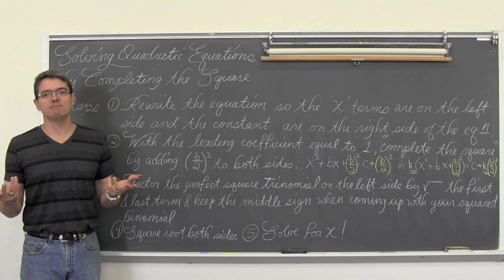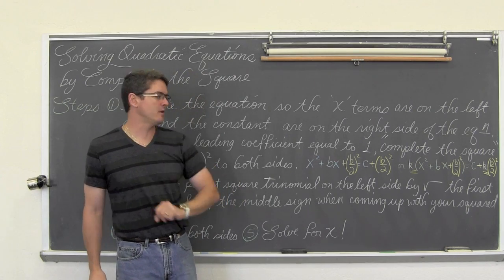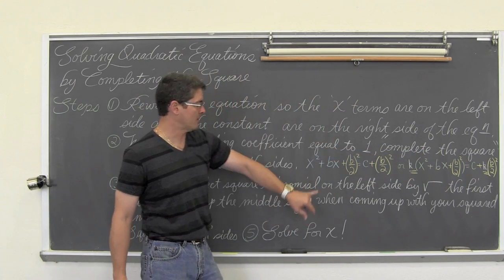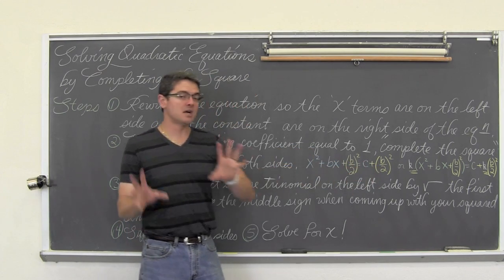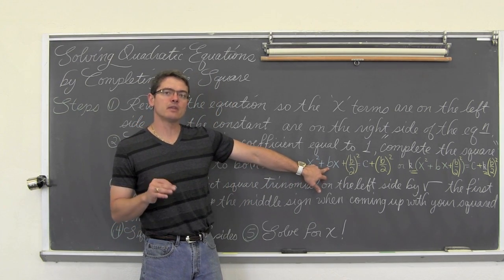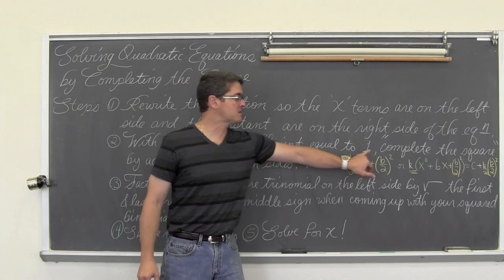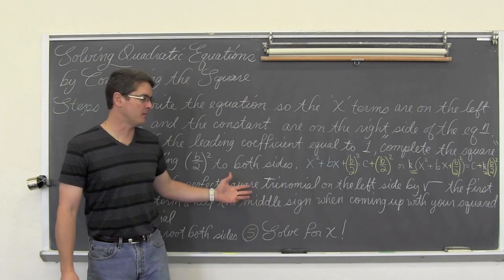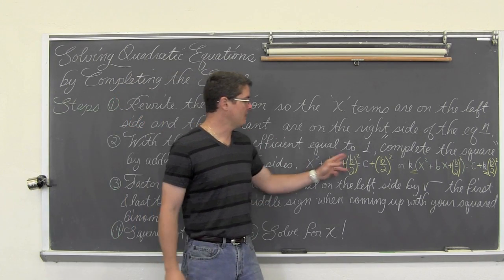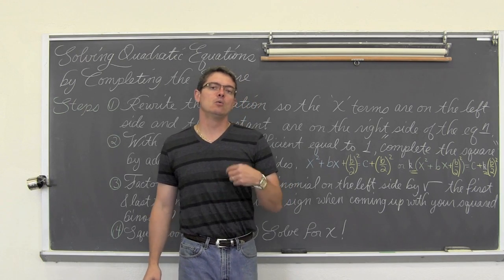Now, in pre-calculus when you are graphing conic sections, your only option is to factor the leading coefficient out of the x terms, find b — the coefficient of the linear term — divide it by two, square it, and add it to both sides, remembering to multiply what you add inside the parentheses by whatever you factored out. Adding (b/2)² sets up a perfect square trinomial on the left, which makes the rest of the problem much easier.